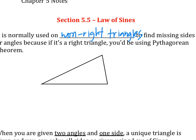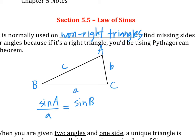Let's review a triangle. Let's say this is vertex A, B, and C. What do we call the side that's opposite to A? Small a. So the opposite side to a vertex uses the lowercase letter. The formula is: sine of angle A over side a equals sine of angle B over side b, which also equals sine of angle C over side c.